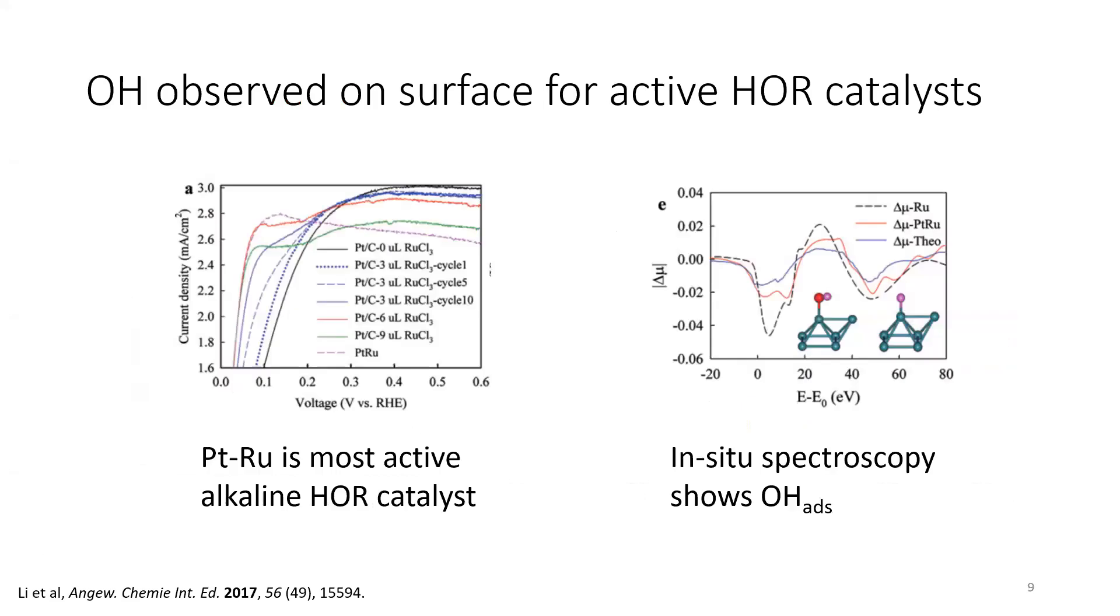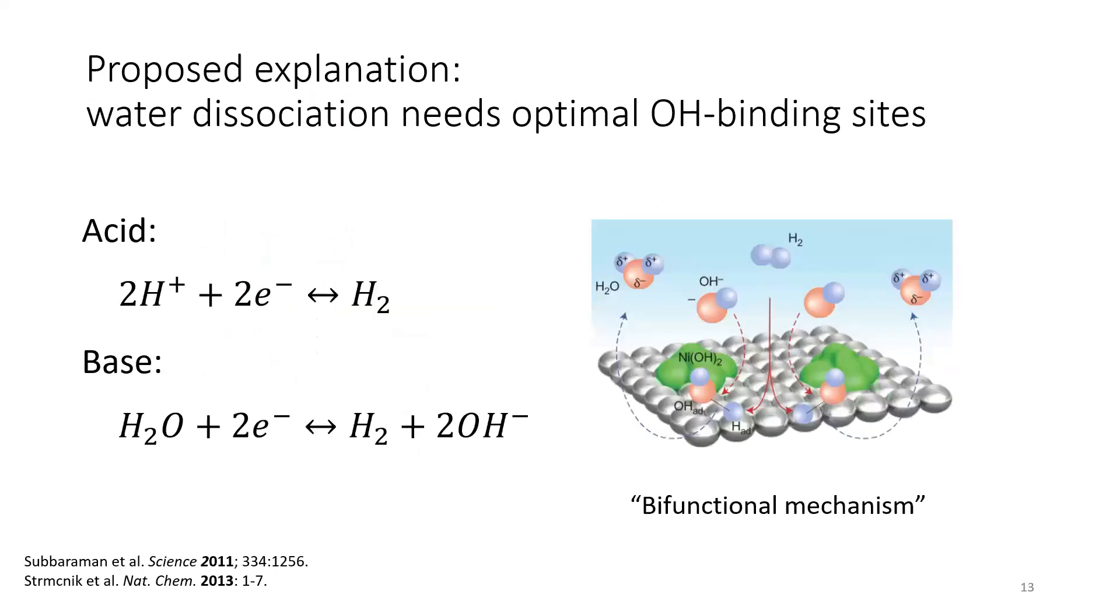So there's very strong evidence that OH is there. Platinum ruthenium is the most active alkaline hydrogen oxidation catalyst. There's been some in-situ spectroscopy that says that OH is there. But just because it's there doesn't mean it's doing something. So this is from a series of fairly high-profile papers almost 10 years ago now, where they pointed out that from Argon, if OH has to be involved with the reaction, that could be why the reaction is slow in base. Water is their source of protons in base. Protons are the source of protons in acid. So water has to split. That could be slow.